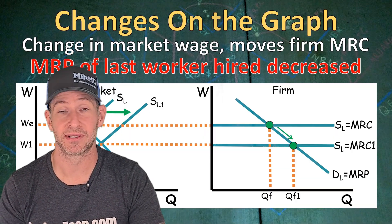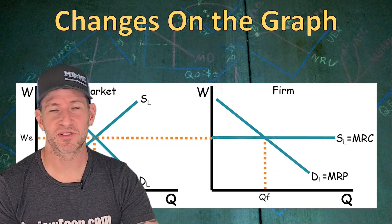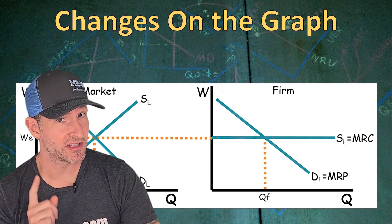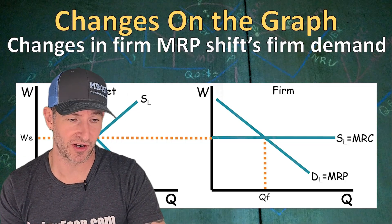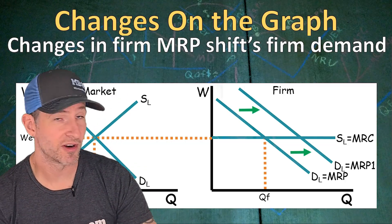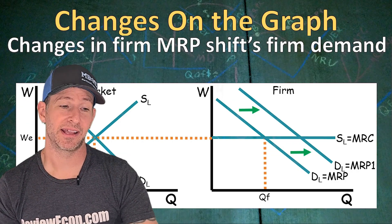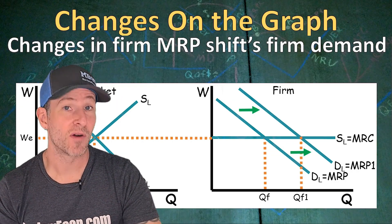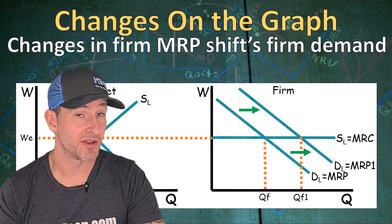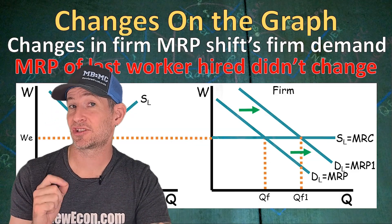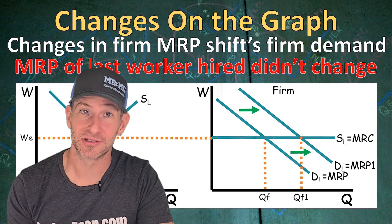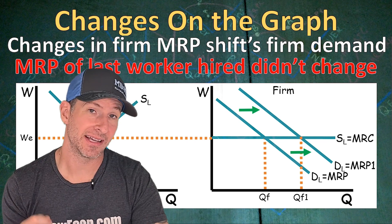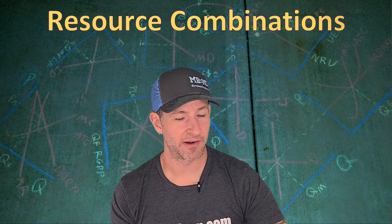If instead we saw an increase in the supply of labor, that would drive the equilibrium wage downward. That new lower wage shifts the marginal resource cost downward for the firm, resulting in a higher profit-maximizing quantity of labor. At this new higher quantity of labor, there is a decreased marginal revenue product for the last worker hired — because at QF1, we are at a lower point on the MRP curve. We could also see changes that only impact the firm: perhaps an increase in the productivity of just the firm's workers would shift the demand for labor only for this particular firm.